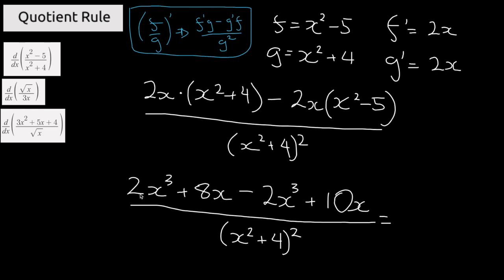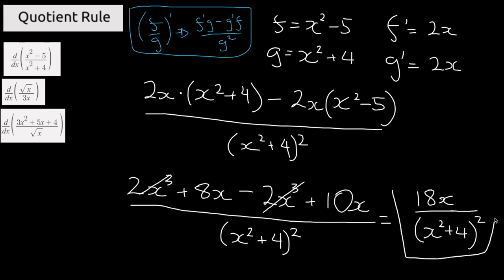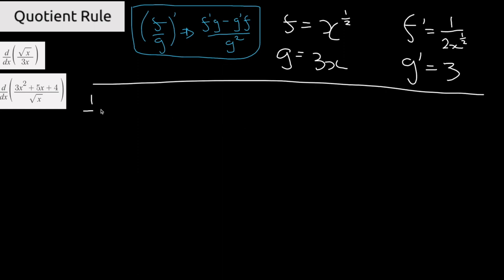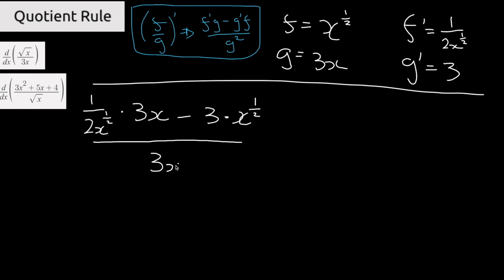The 2x³ terms cancel out and we're left with 18x divided by (x squared plus 4) squared — that is the final solution. For the next one, f is equal to x to the power of 1/2, f prime is equal to (1/2)x to the power of negative 1/2, g is equal to 3x, and g prime is equal to 3. So we have (1/2)x to the power of 1/2 multiplied by 3x, minus 3 multiplied by x to the power of 1/2, all divided by (3x) squared.